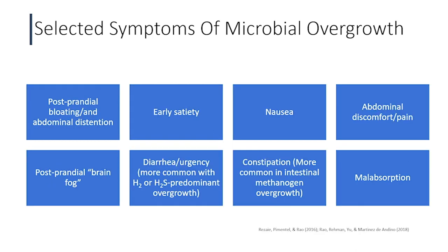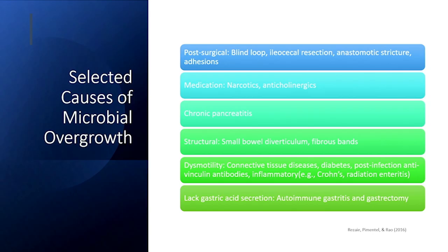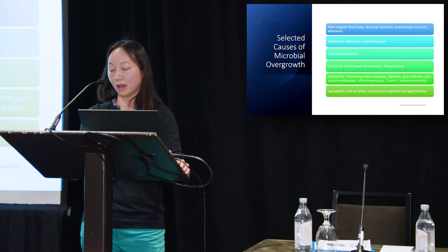Many of the selected symptoms of microbial overgrowth overlap between SIBO and IMO. One thing to highlight is that methane gas has been known to cause constipation and is associated with irritable bowel syndrome with constipation-predominant type, while hydrogen sulfide causes more diarrhea. As has been pointed out, SIBO or IMO are not primary conditions — they are usually secondary conditions due to something else, and there are common conditions or risk factors that put patients at risk.